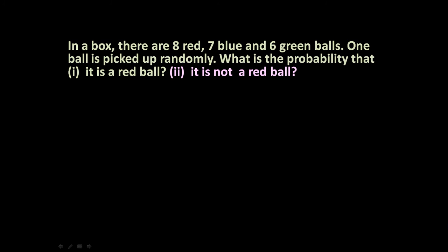The given problem is: in a box there are 8 red, 7 blue and 6 green balls. One ball is picked up randomly. What is the probability that it is a red ball? Part 2: what is the probability that it is not a red ball? So if we pick up any one ball randomly from that box, we need to find both probabilities.